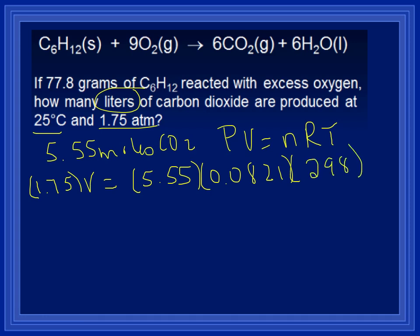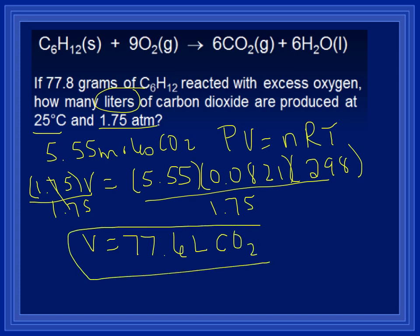So multiply 5.55 times 0.0821 times 298. We're going to divide all that by 1.75. And that leaves us with V equals 77.6 liters of CO2. Because that's what we had moles of.